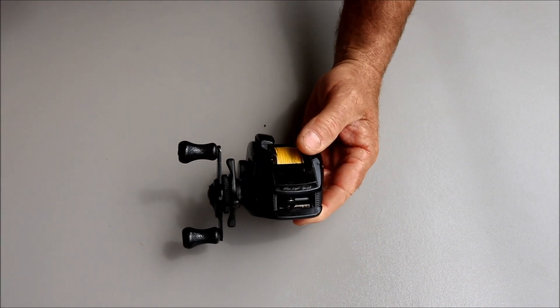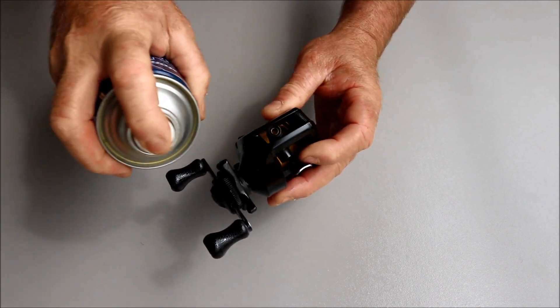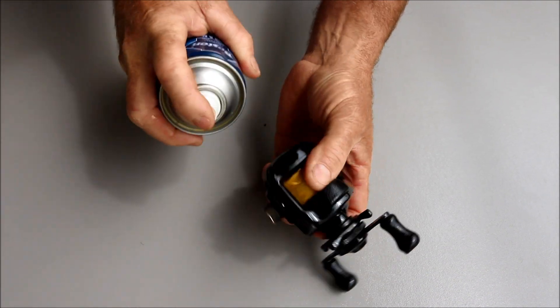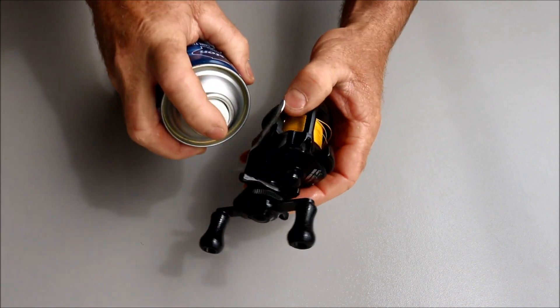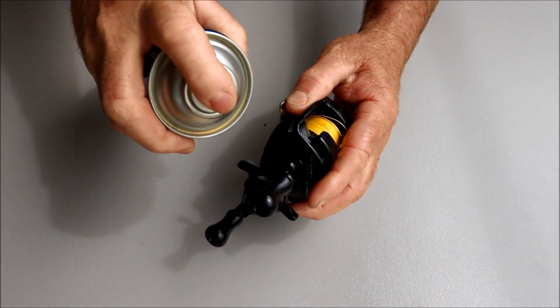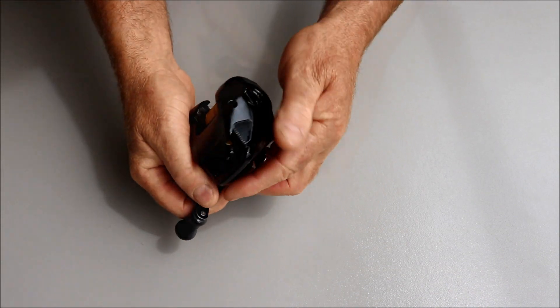The next step is I'll take a penetrating spray and just give the reel a light spray over. Even on the body. Underneath. Again, try and prevent getting it on the line. A little bit won't hurt. It'll evaporate.